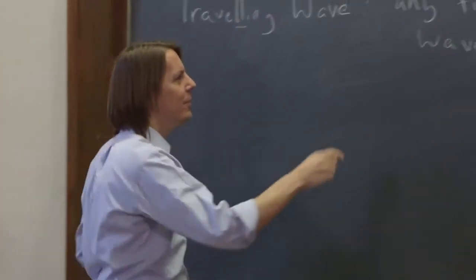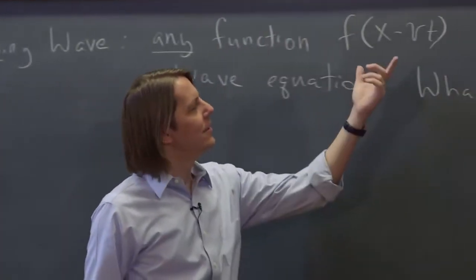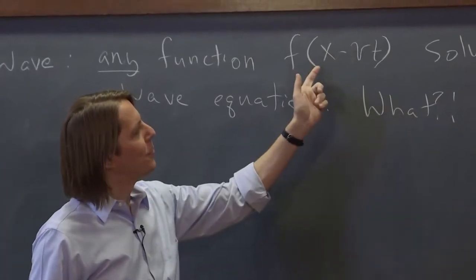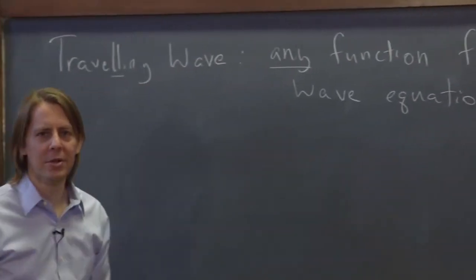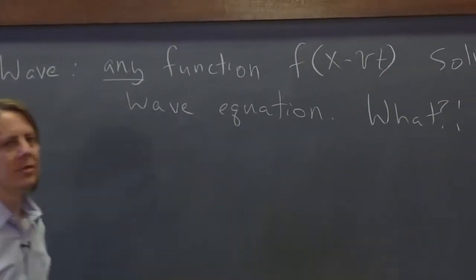We just write a function that solves the wave equation. Surely that's not the case. But it is true. Any function, as long as the independent variables x and t show up in the form x minus vt, it'll solve the wave equation. And it will move as a traveling wave at velocity v.